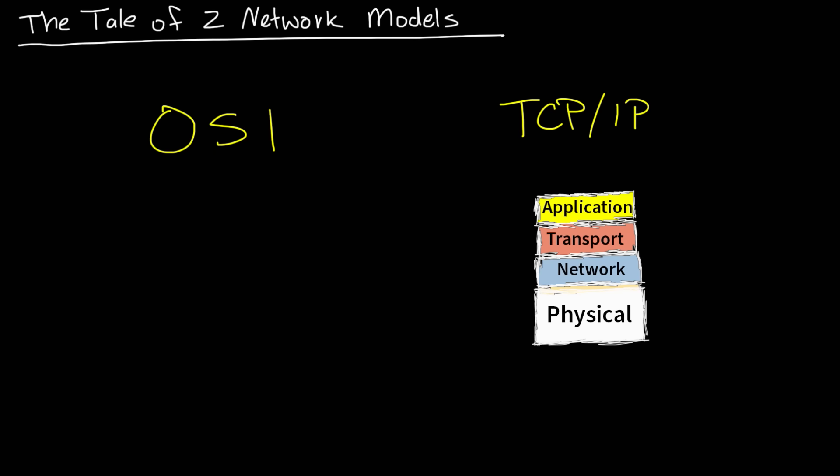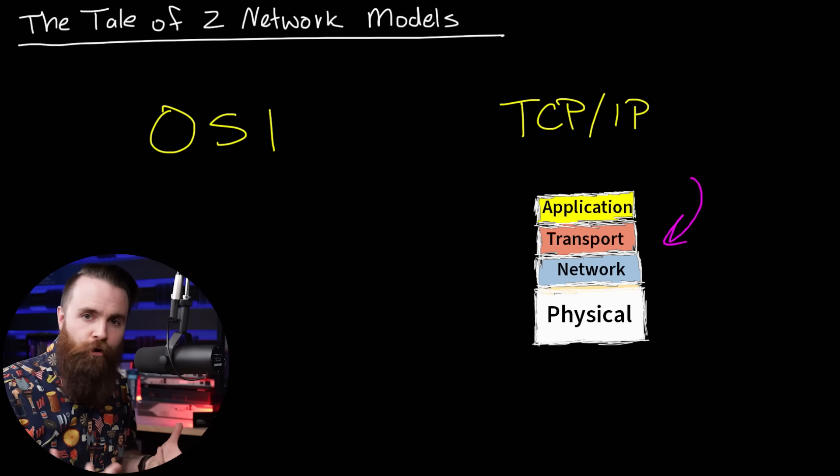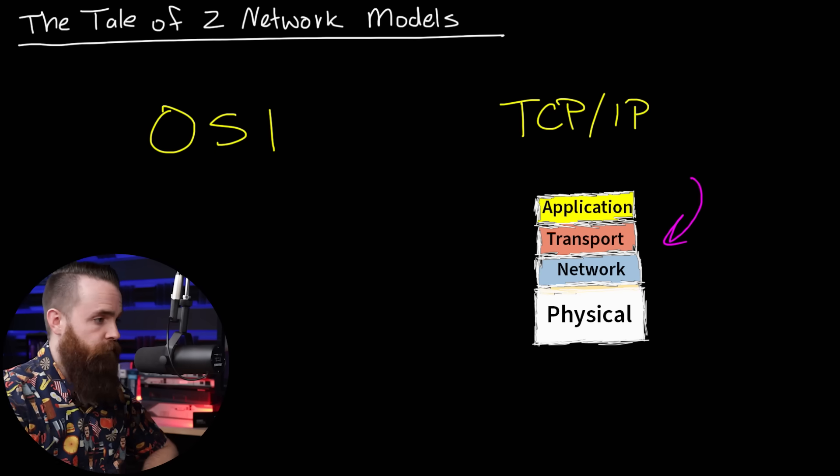TCP/IP is just a list of rules or guidelines, standards on how computers can communicate, how we design those systems. And there's a lot that goes into that. So to make things more simple, more digestible, easier to understand and implement, we divided all those functions into layers. Each of these layers defines some kind of protocol or standard we'll use when computers connect.